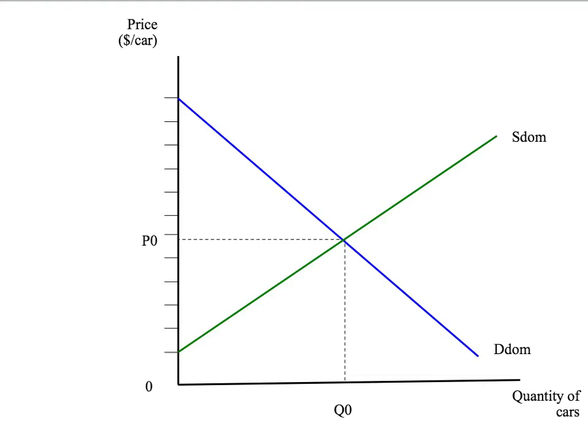In this example, let's look at something we want to import. So we're going to have the quantity of cars down on the horizontal axis, and the price of cars on the vertical axis. Our initial equilibrium, where domestic supply intersects domestic demand, is going to be at P nought and Q nought. That is our equilibrium in the absence of trade or in autarky.